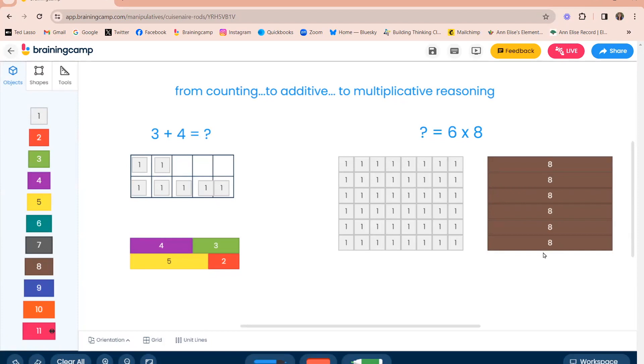That's in that additive phase of thinking that multiplication means repeated addition. So they're thinking about adding those groups together. Now they might skip count by sixes or they might skip count by eights, whatever their brain decides that it wants to do, but that is additive reasoning. It's not multiplicative reasoning and it will not translate as we get to larger numbers, decimals, and fractions.